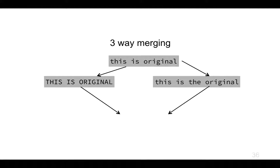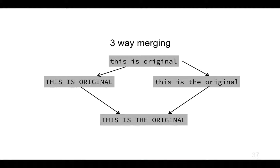The answer is that git can't tell what you intended. It can't do it semantically — it can't work out that the left one capitalized and the right one inserted a new word. It can't disambiguate. All it does is say: these two branches have made changes to the same line of text, and they are different changes, so there is a merge conflict. You're going to have to work this one out. You then go in and edit it manually to fix the merge conflict.